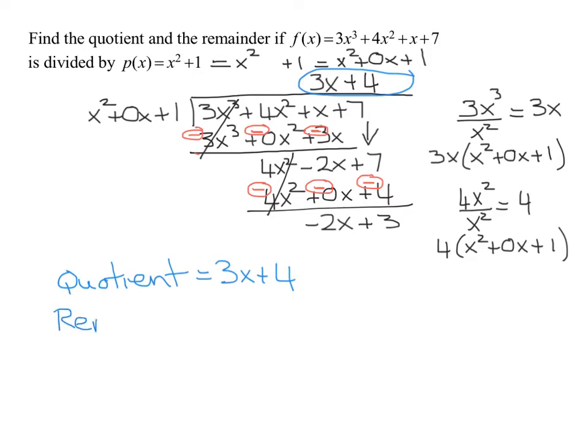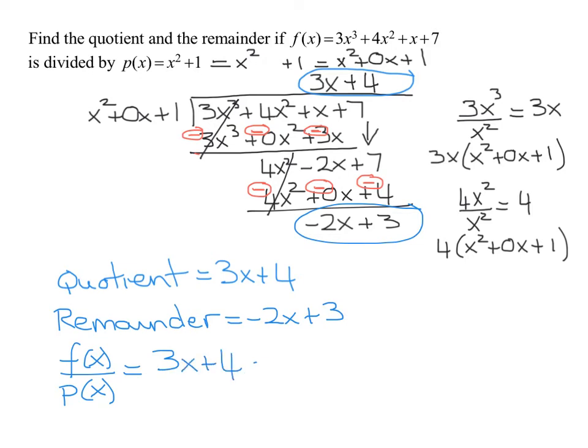And the remainder is here, is negative 2x plus 3. Another way of writing the answer is we could say that f of x divided by p of x equals the quotient 3x plus 4 plus negative 2x plus 3 all over x squared plus 1.